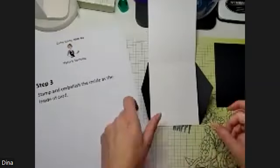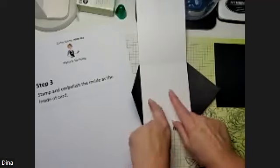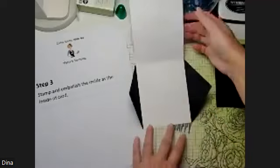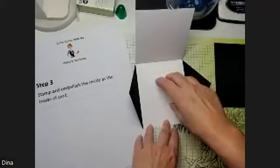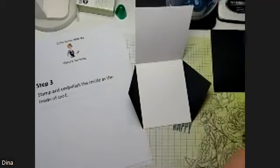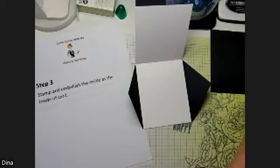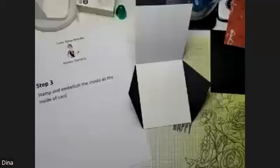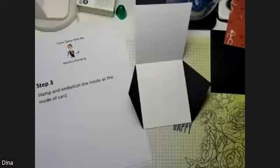Now you are going to go ahead and stamp and embellish this right here, the bottom part, because that's going to be the inside of your card. So whatever you want on the inside, you're going to put right there. What kind of cards are you guys making? First day for me. I go generic until we're at the end so you see exactly what it's going to look like.